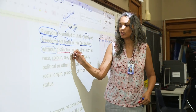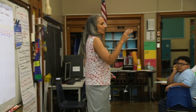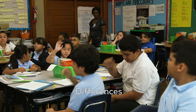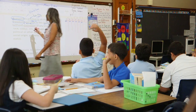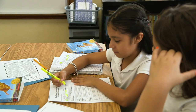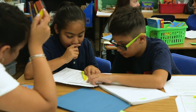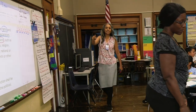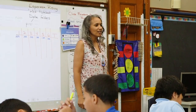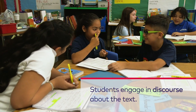Without distinction. What did we say distinction means last time we went over this? Differences. Yes. Without differences. I need you to find at least two distinctions or two differences that do not take away our human rights. On your mark, get set, go. Work with your partner.